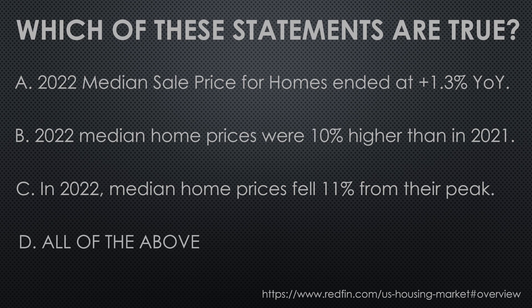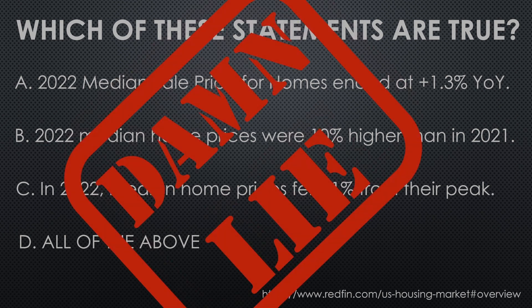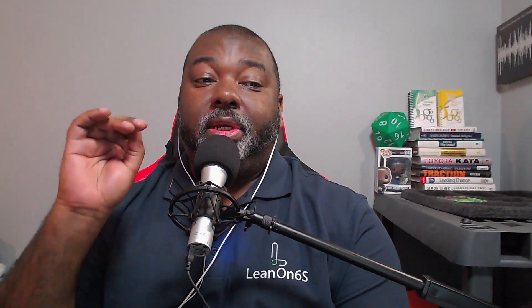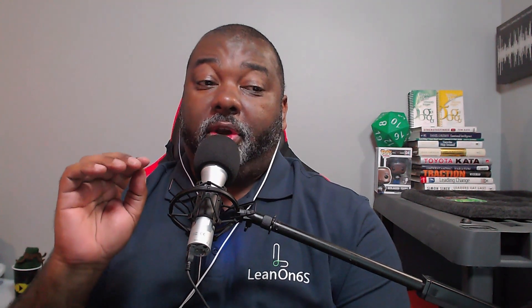If you answered D, all of the above, you would be right. And this, my friends, is why the housing market is a damn lie. Hello and welcome back to Lean on Success, where process improvement is self-improvement. My name's Ben. I'm a Lean Six Sigma Master Black Belt. And today, we're going to do episode two in our Lies, Damn Lies, and Statistics series, where we expose ways that savvy analysts manipulate data to fit their narrative and show you how to not be fooled by them. But before we jump in, make sure you hit that like button and subscribe to the channel for more content like this.